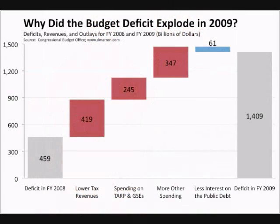During periods of low spending and low GDP, fiscal policy has had its problems as well. Increased government spending and reduced taxes has led to budget deficits. A budget deficit is when the amount the government spends in a year exceeds the amount of revenue it makes through taxation and other means.